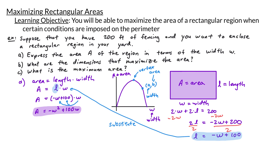To find the vertex, we need to write our area equation in standard form. Our first step is to factor out the number in front of W squared, so we factor out negative 1. Dividing each term by negative 1, negative W squared becomes positive W squared and 100W becomes negative 100W. Our next step is to complete the square, so we have A equals negative 1 times the quantity W squared minus 100W, leaving space before closing the parentheses.